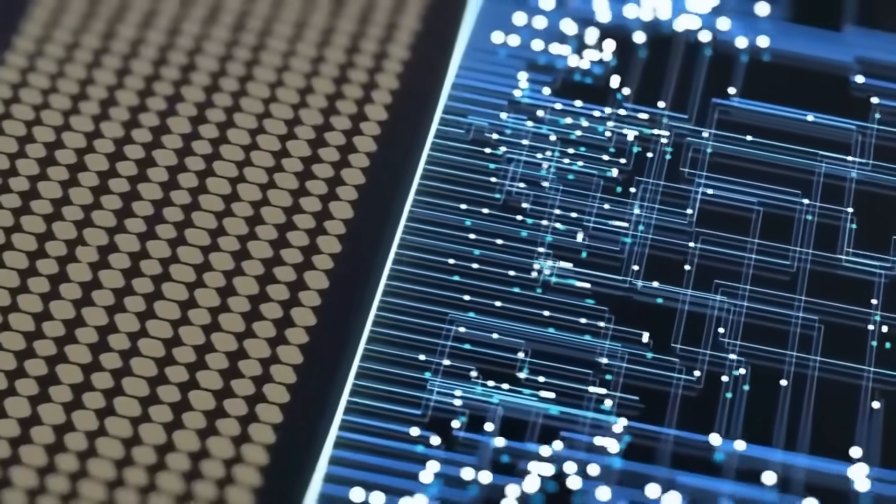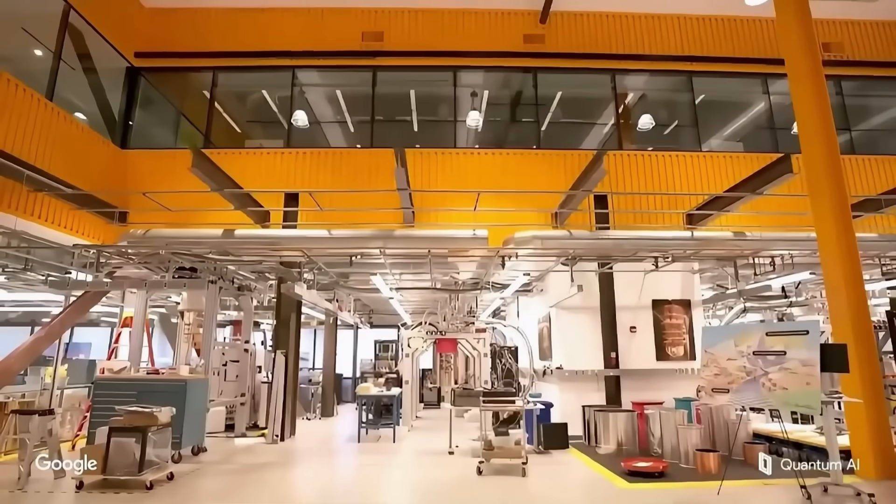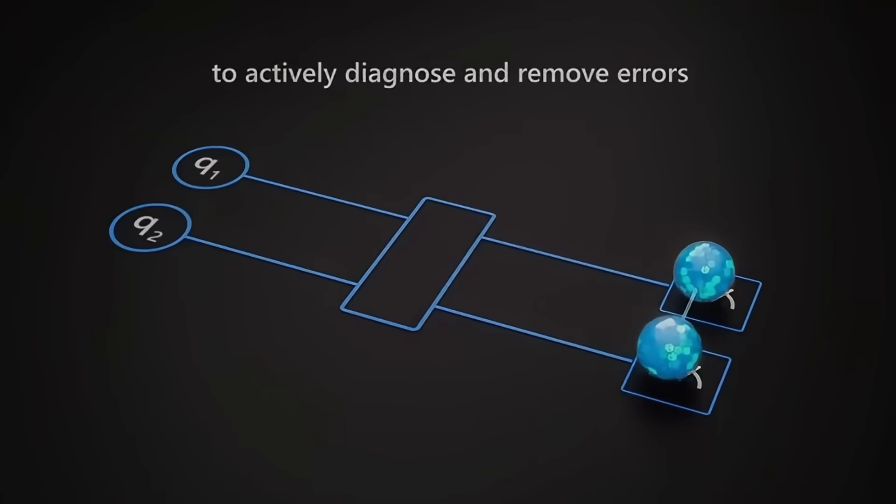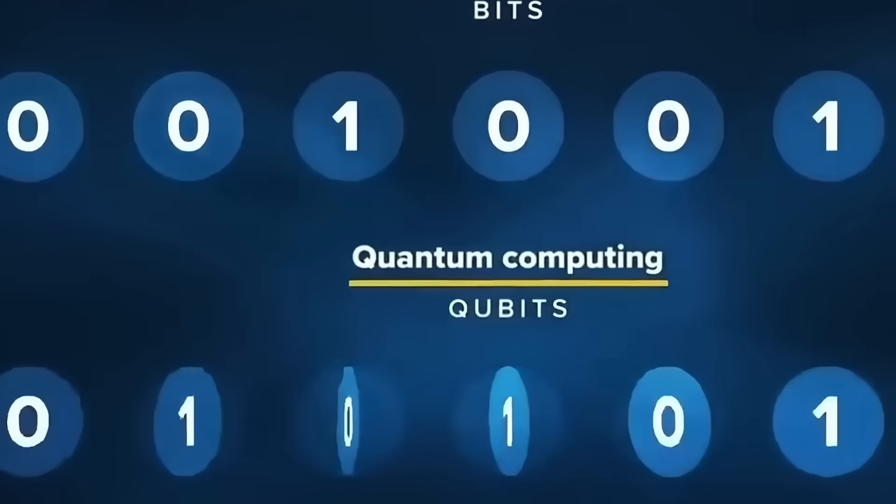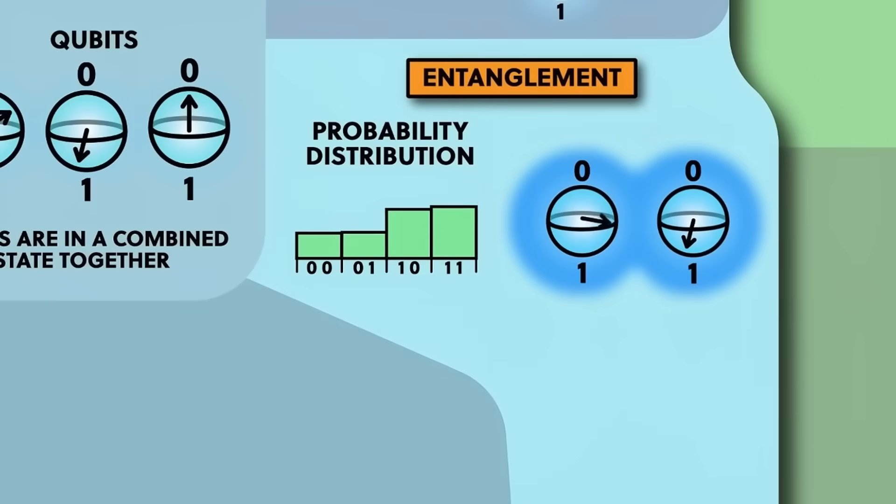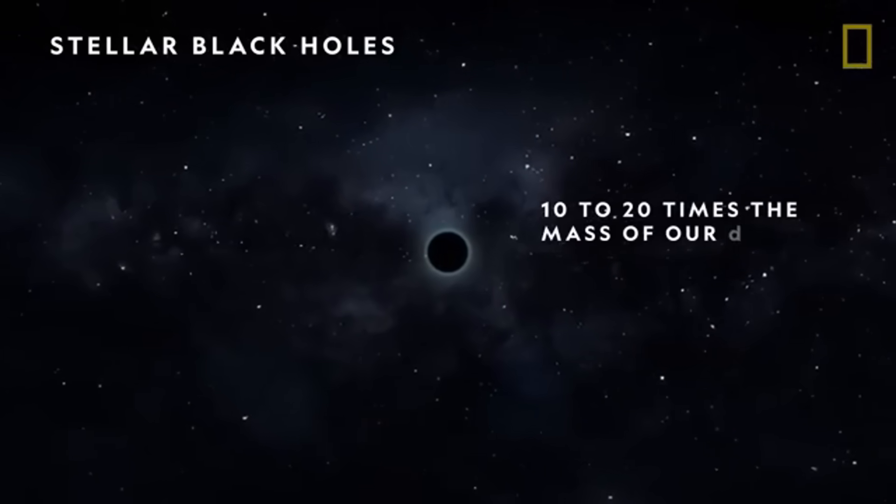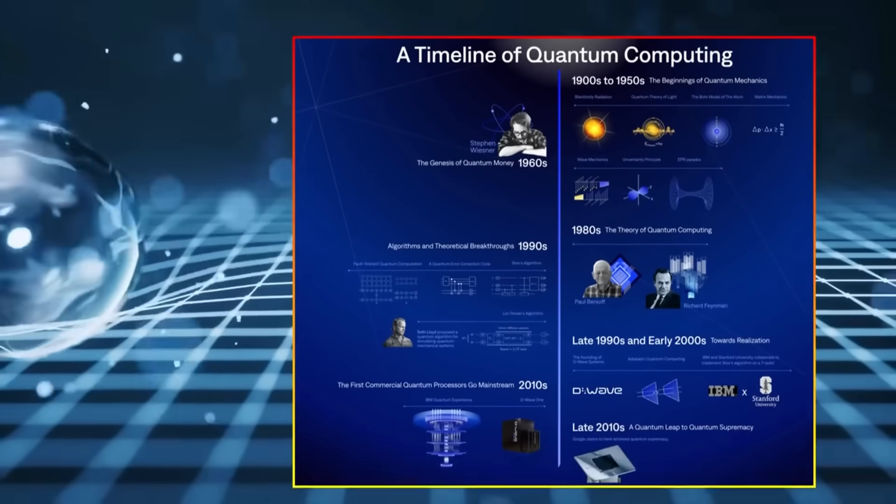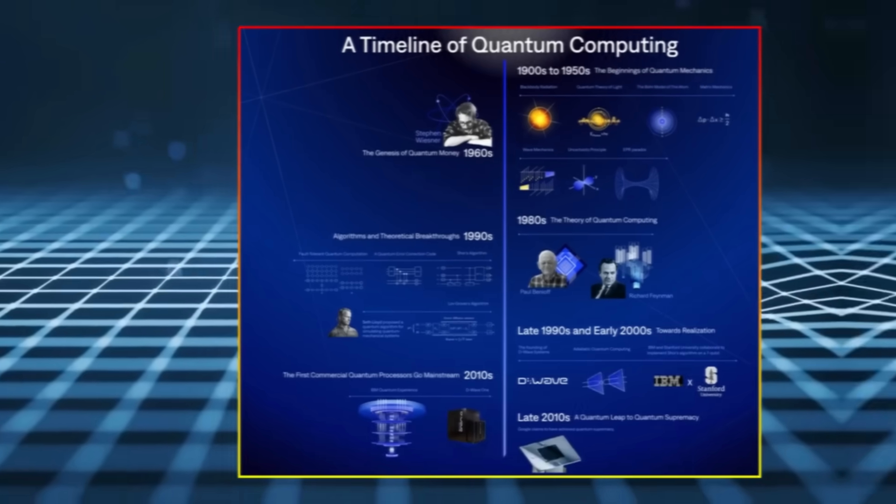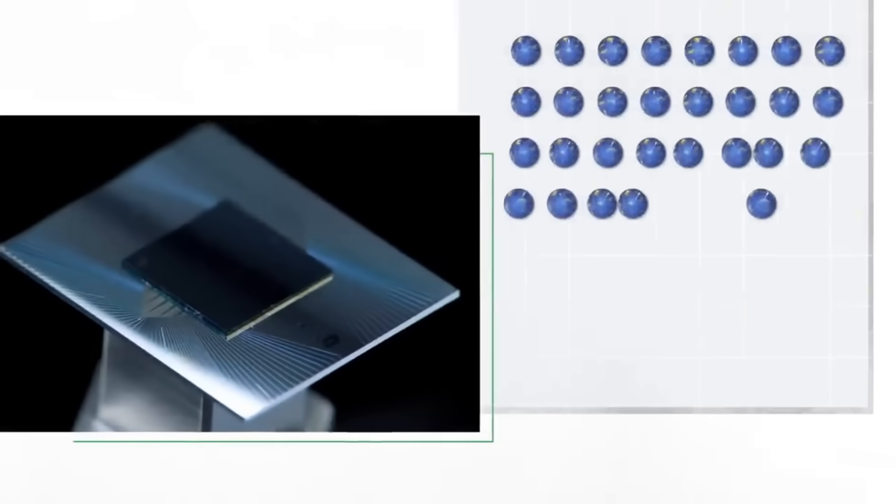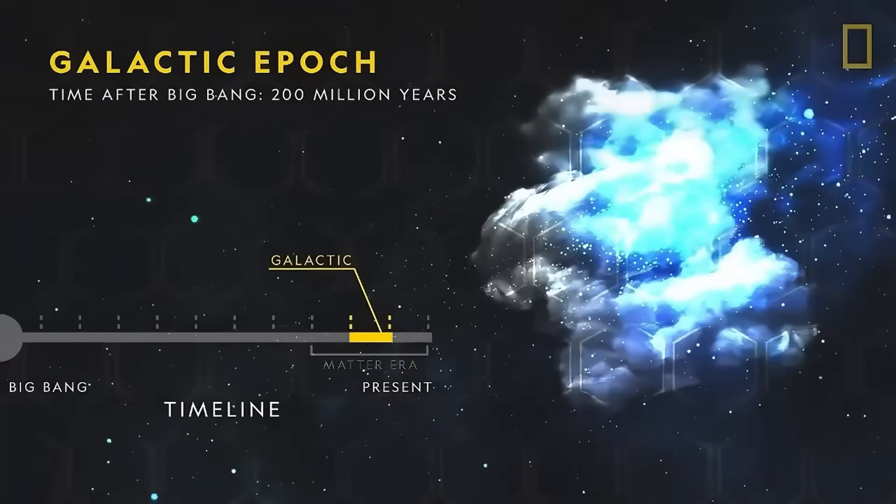The implications go beyond just understanding our origins. If the universe is indeed a self-computing quantum system, and if advanced civilizations throughout the cosmos have recognized this, we might be witnessing a convergence of scientific understanding across different worlds. This pattern suggests something profound. Perhaps the answers about cosmic origins aren't arbitrary or random, but instead represent a deep truth that any sufficiently advanced intelligence will eventually discover through quantum information theory. The idea that we all might arrive at similar conclusions about the universe's quantum computational nature, regardless of our biological or technological differences, points to an underlying reality that transcends our individual perspectives.